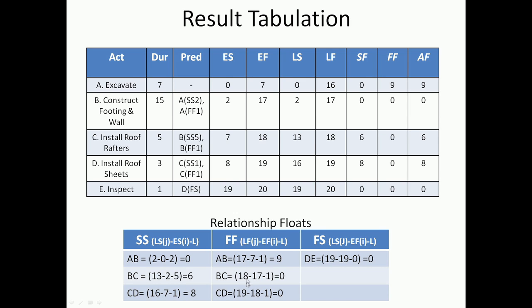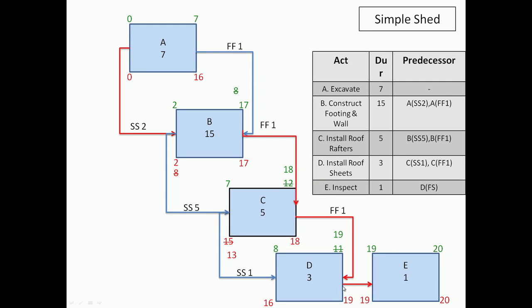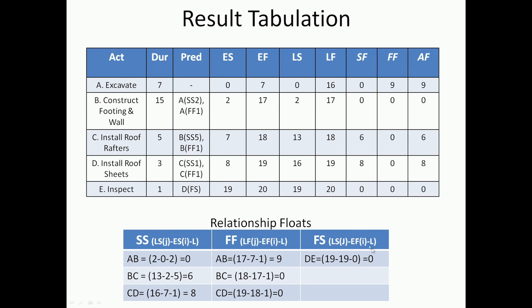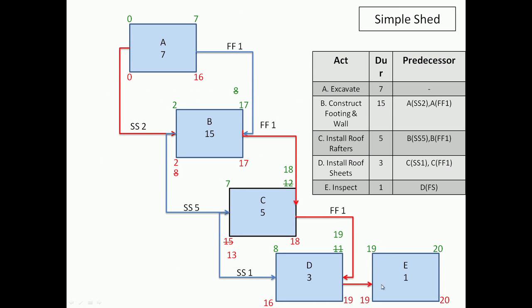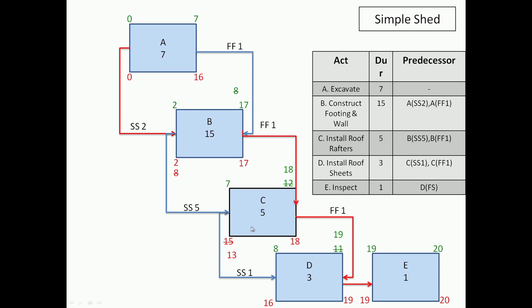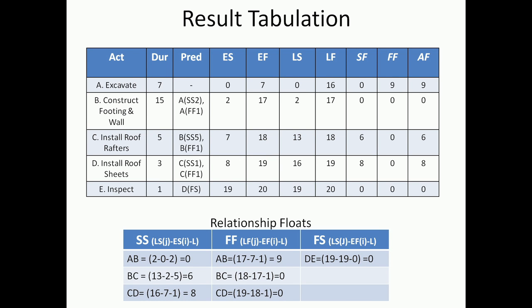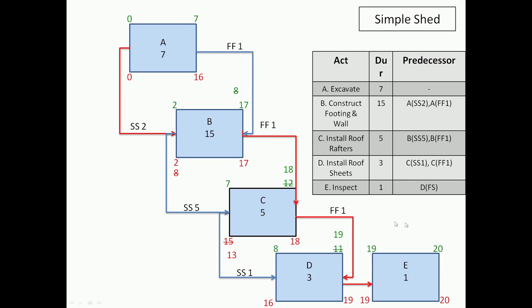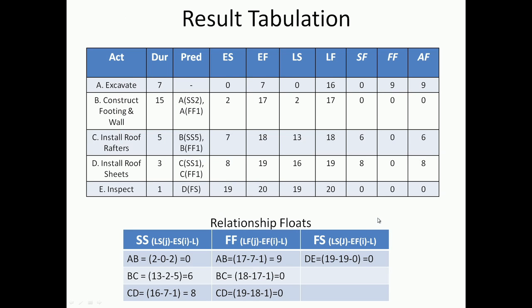Similarly, all the finish-finish floats are represented, and then the finish-start relationship - the only finish-start here - and its float is also represented. When we have no lag it gets to 0. Ideally we would take a network representation like this, do the analysis, and show it in a tabulation. In a larger project that might be easier to read, but from a conceptual standpoint this is fairly illustrative - that is why I have used more of the network for the result discussion rather than just the tabulation.